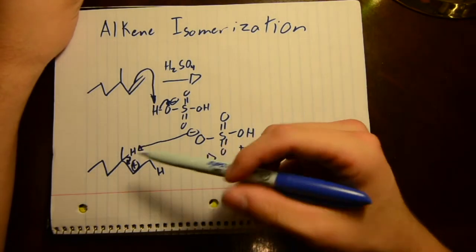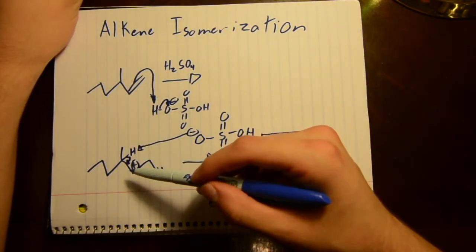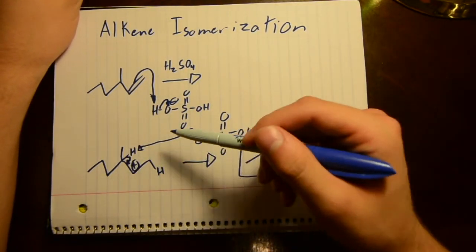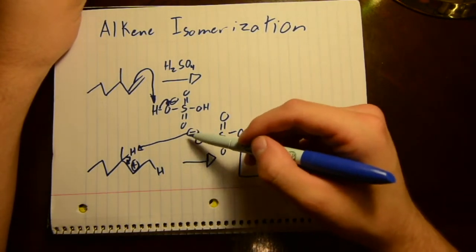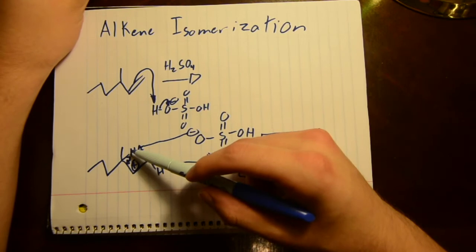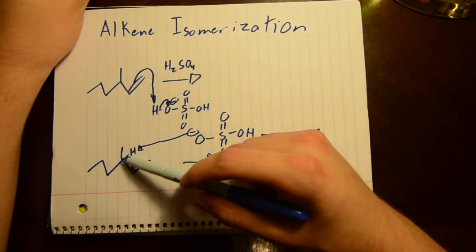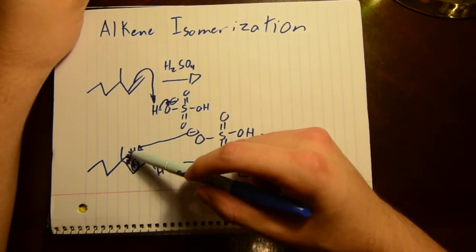Next you'll have an alkene with a positive charge on it—a carbocation, it's called. So the conjugate base of that acid, now with its negative charge, comes and takes a hydrogen, and then this carbon-hydrogen bond becomes a double bond.